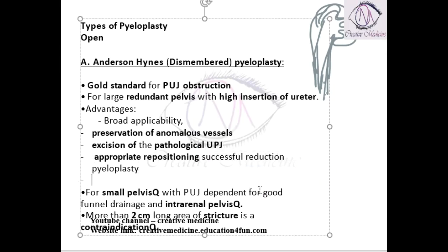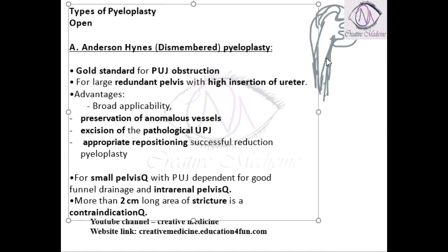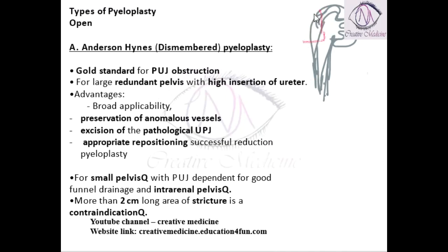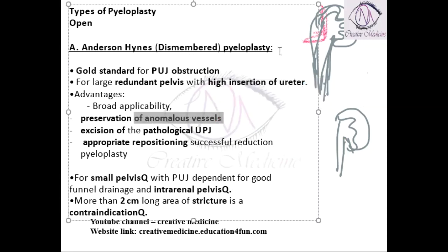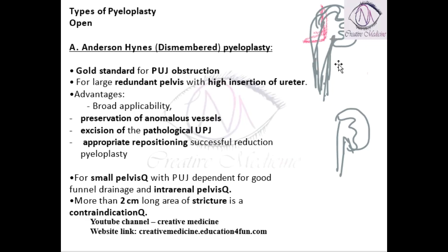In Anderson-Heinz pyeloplasty, we make an incision and remove the extra part of the pelvis, then this extra part is anastomosed so that the pelvis size will decrease. We can preserve the anomalous vessels, excise the pathological uretero-pelvic junction, and reposition it — anastomosing the normal ureter so that continuity is well maintained. This is done when there is a large redundant pelvis with high insertion of the ureter.